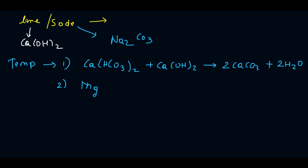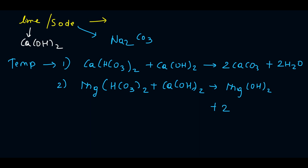Next, when magnesium temporary hardness reacts with lime: Mg(HCO₃)₂ plus Ca(OH)₂ gives us Mg(OH)₂ plus 2 CaCO₃ plus 2 H₂O. The coefficient 2 is taken on both sides for balancing this reaction.